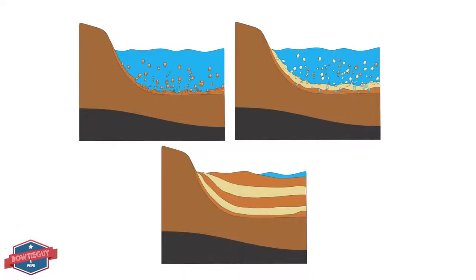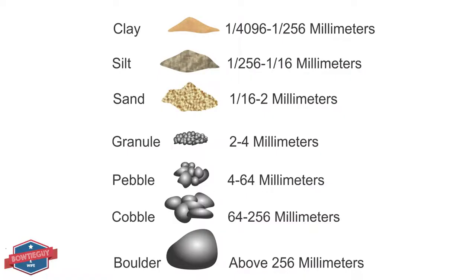Sediment that is deposited comes in many different sizes. Clay is the smallest, followed by silt, then sand, then granules, then pebbles, then cobbles, and then boulders.